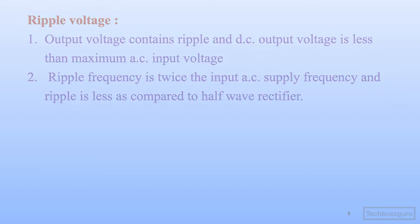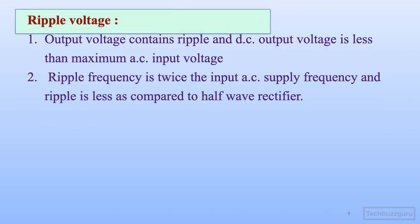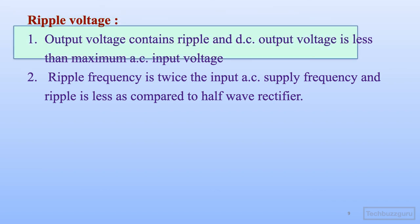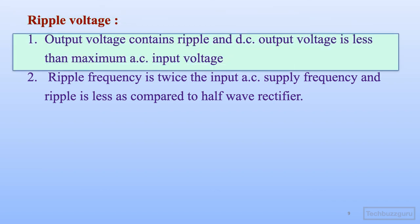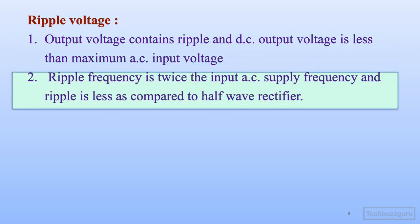The output voltage contains ripple, and the DC output voltage is less than the maximum AC input voltage due to the presence of ripple content. The ripple frequency in the case of a full wave rectifier is twice the input supply frequency, and the percentage ripple is less compared to the half wave rectifier circuit.